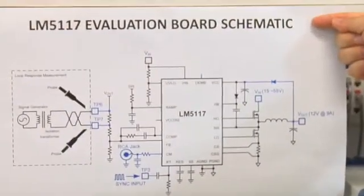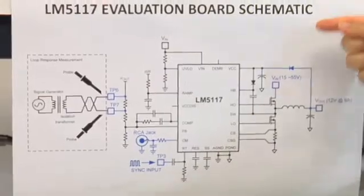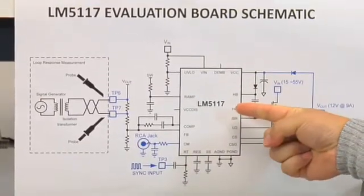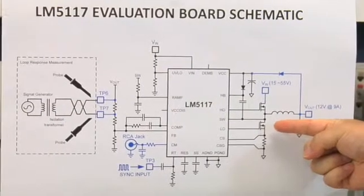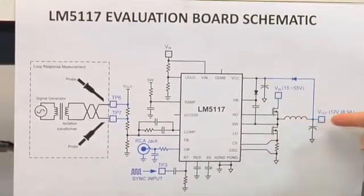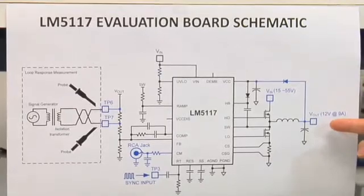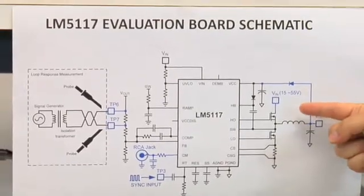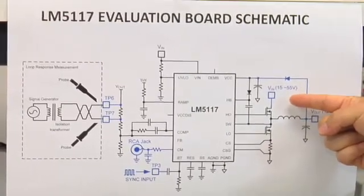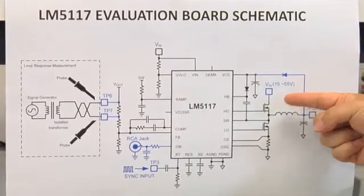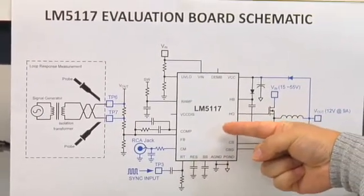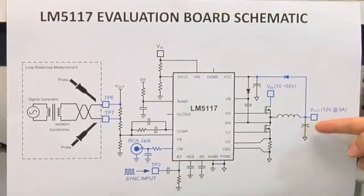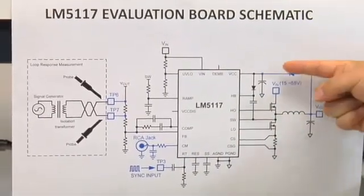Here we have evaluation board schematic showing LM5117. Currently, the board is set to provide 12V output at 9A from an input voltage 15V to 55V. To minimize controller power dissipation, 12V output is applied to VCC.